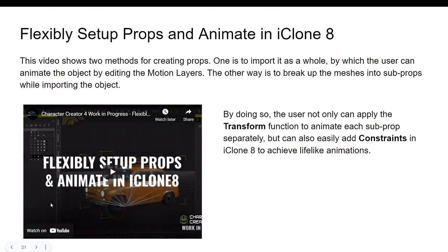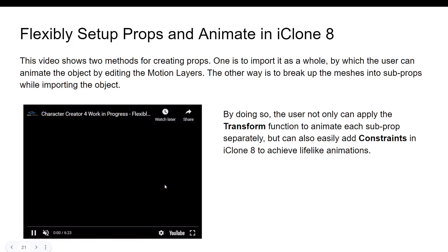For flexible prop setup and animation in iClone 8: there are two methods for creating props. One is to import the whole object by which the user can animate it by editing the motion layer; the other allows users to apply transformation functions to animate each prop. I'll do a dedicated video going deep into this — don't forget to subscribe so you don't miss it.